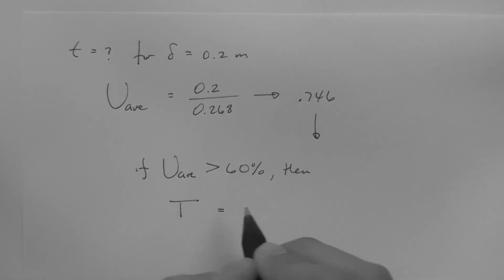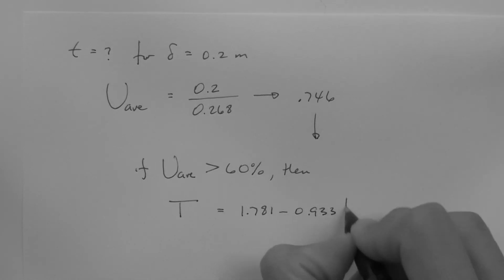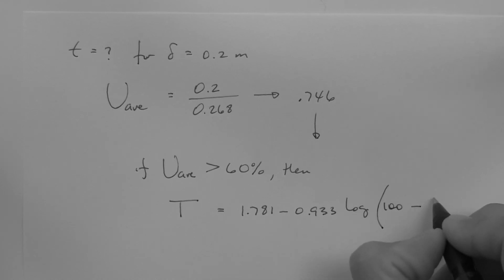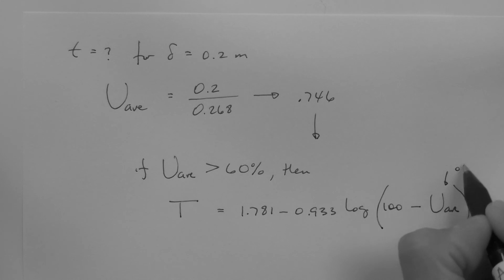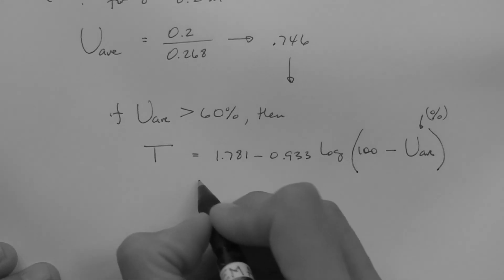But, we can also use the following equation. If the average degree of consolidation is larger than 60%, then we can use the following equation. Time factor is equal to 1.781 minus 0.933 log of 100 minus the average degree of consolidation, expressed as a percentage.